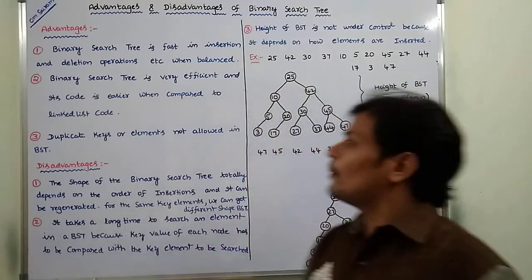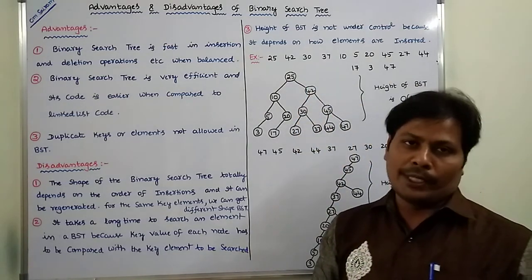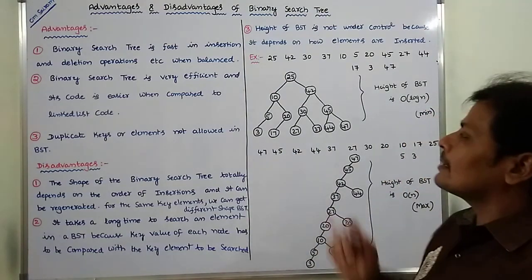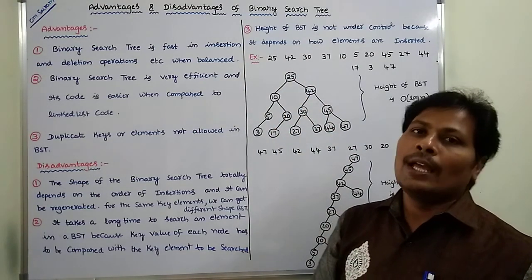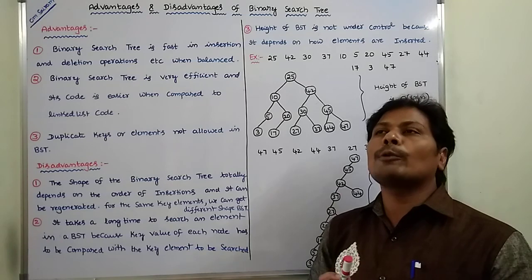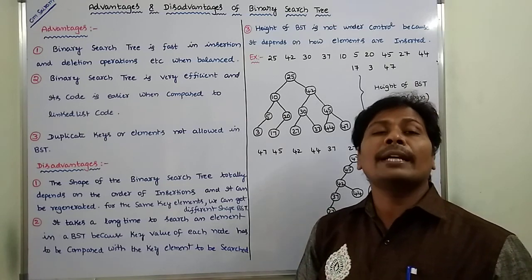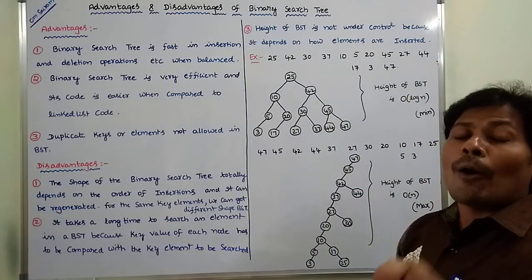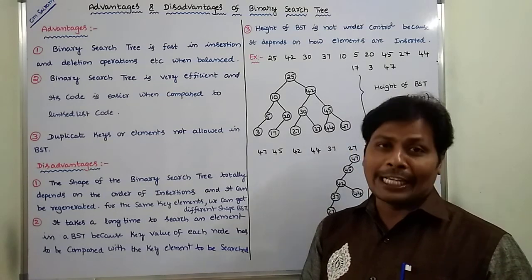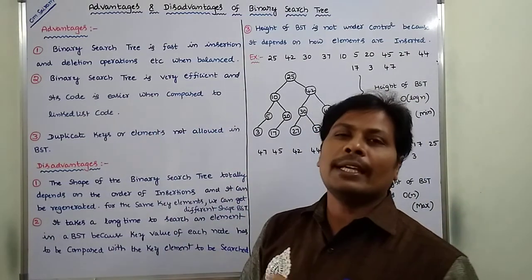Suppose we are inserting an element into the binary search tree — that key element is compared with the root node. If it is greater, go to the right subtree; if it is lesser, go to the left subtree. Each and every node contains its key value, and our key element is compared with the node's key value to insert, delete, or search an element efficiently.